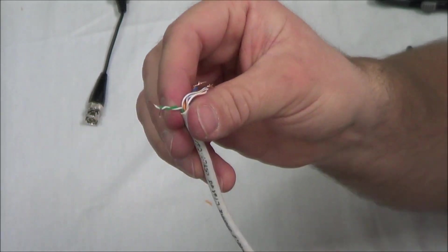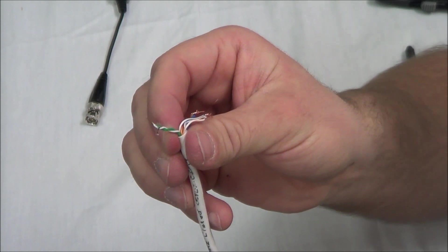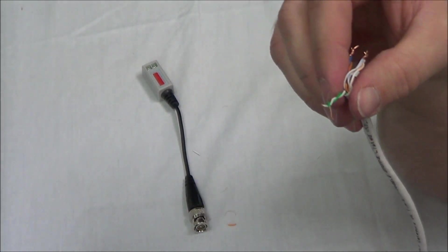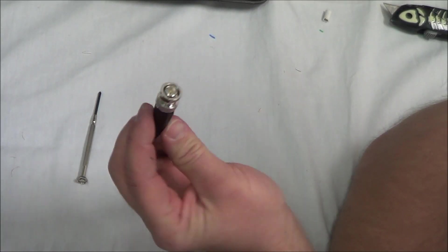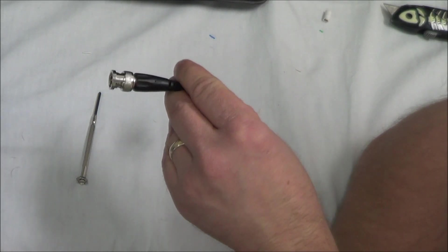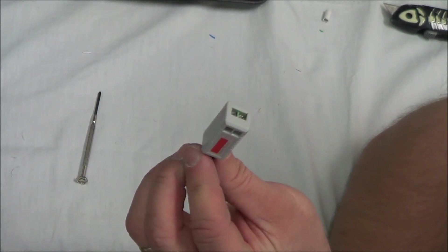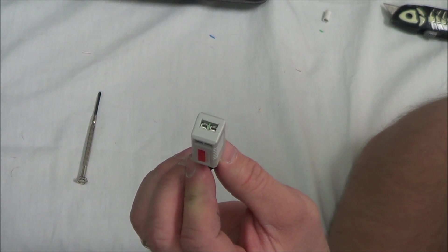Now, we're ready to attach our video side to our video balun. As you can see on this end, we have the BNC. And then on this end, we're going to insert our wires, our video wires. We have two little slots, one for positive and negative.